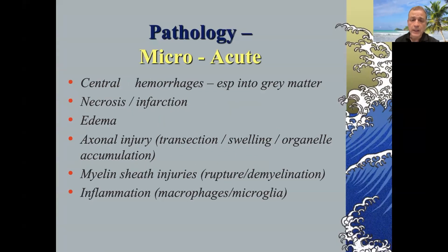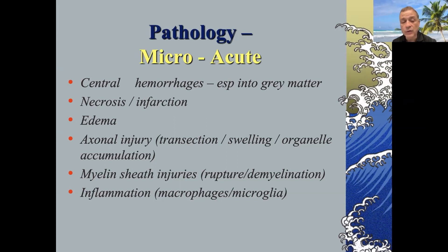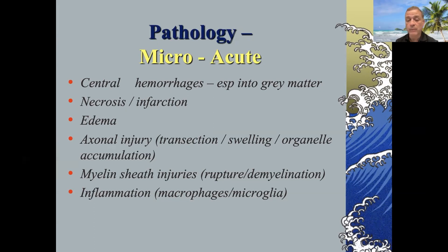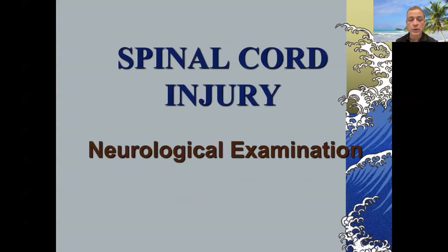Under the microscope, you'll see central hemorrhage especially in the gray matter, necrosis, and edema. You'll see axonal injury with retraction of the axonal ends, and if the axons are transected, organelle accumulation and swelling. You'll also see myelin sheath injury including demyelination, and inflammation — which is also a very important secondary injury target for drugs.